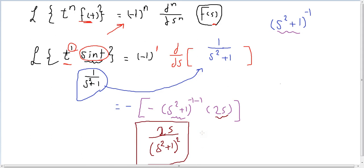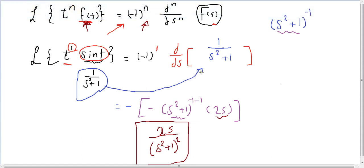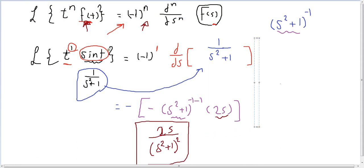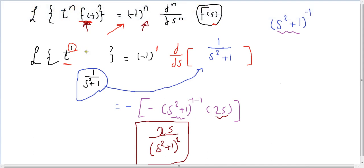So that's the solution: 2s over (s² + 1)². To summarize: if you have t to the power of n and you know the Laplace transform of f(t), you can apply this rule and take the derivative. Do you want to take another example? Let's take another example.